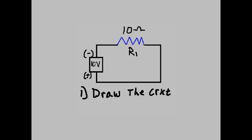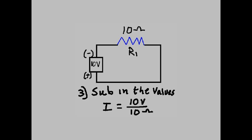The battery is marked 10 volts. So we draw the circuit, and then we write the equation. I equals V over R. Then we sub in the values. I equals 10 volts over 10 ohms.